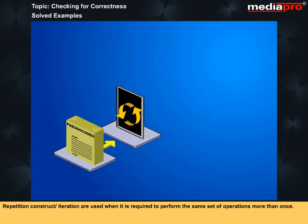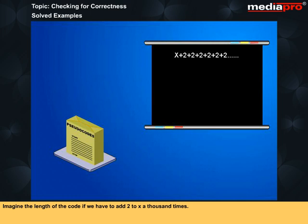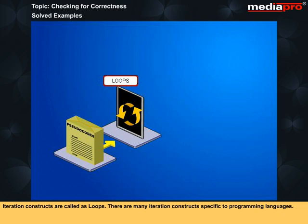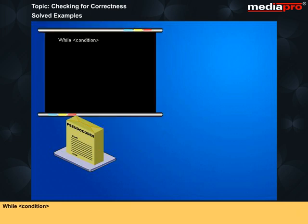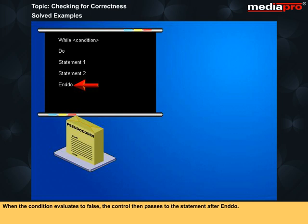Repetition construct or iteration are used when it is required to perform the same set of operations more than one. For example, add the number 2 to the variable x three times. This can be written in three steps: x is equal to x plus 2, x is equal to x plus 2, and x is equal to x plus 2. Imagine the length of the code if we had to add 2 to x a thousand times. The same set of operations can be represented using an iteration construct in a simple way. Iteration constructs are called as loops. There are many iteration constructs specific to programming languages. The most general one is: While condition, Do Statement 1 Statement 2 End do.